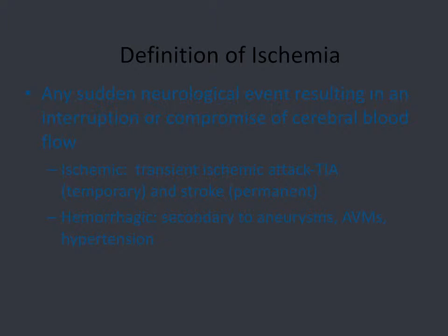Ischemia is any sudden neurological event resulting in an interruption of blood flow to the brain. When it's transient, it's referred to as a TIA, or transient ischemic attack, while permanent deficits are called strokes. Along with ischemic strokes, you can have primary intracranial hemorrhages, which are managed entirely differently and have a different set of common underlying etiologies — typically hypertension, aneurysms, and vascular malformations. We'll dedicate the rest of this talk to the treatment and workup of ischemia.